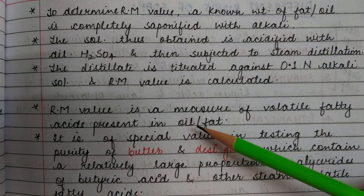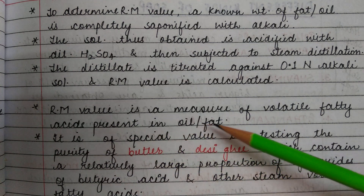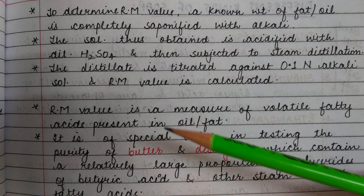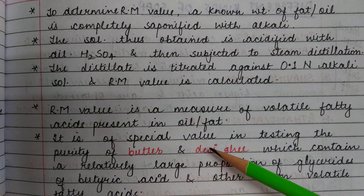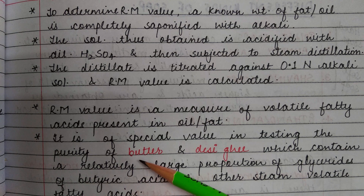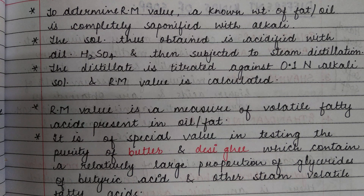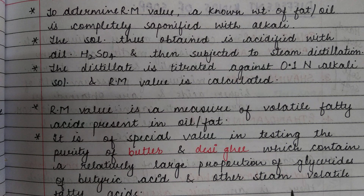Rm value is a measure of volatile fatty acids present in oil or fat. It is of special value in testing the purity of butter and desi ghee, which contain a relatively large proportion of glycerides of butyric acid and other steam volatile fatty acids.